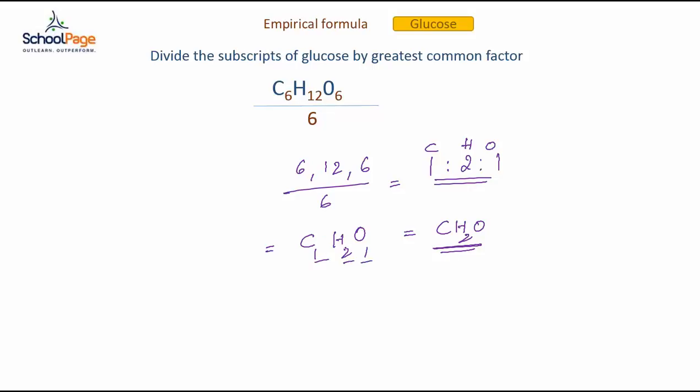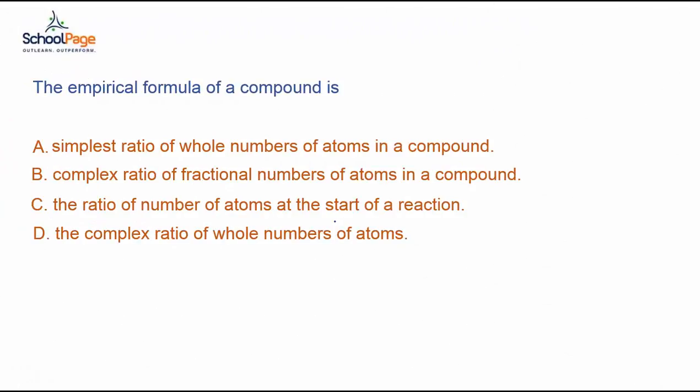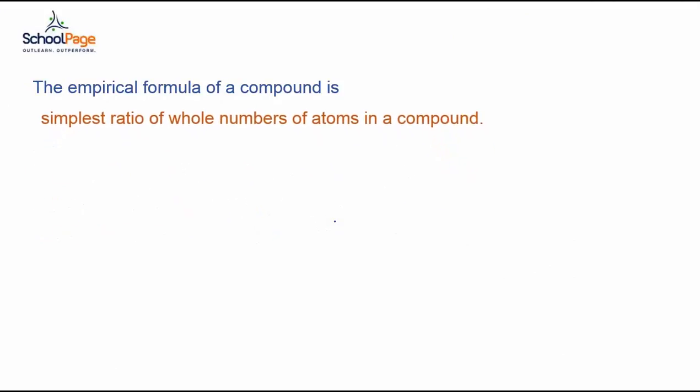Now observe the ratio 1 is to 2 is to 1 which is nothing but the simplest whole number ratios of the elements present in that particular compound. Hence, the empirical formula of a compound is simplest ratio of whole numbers of atoms in a compound.